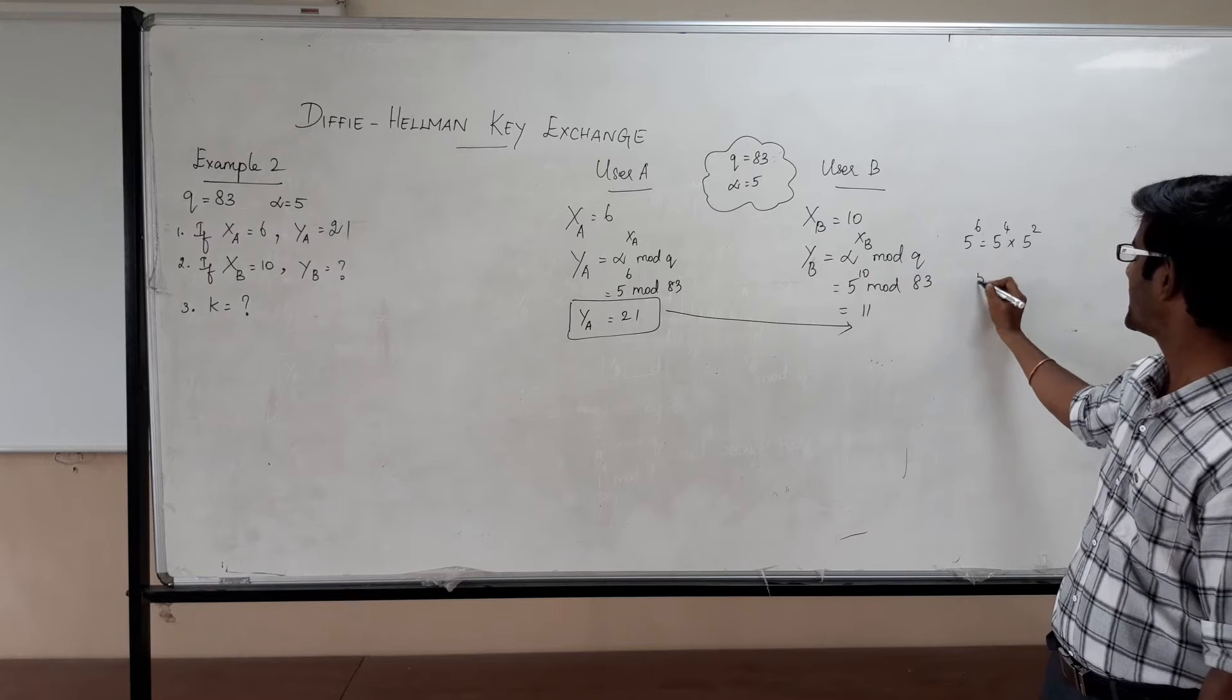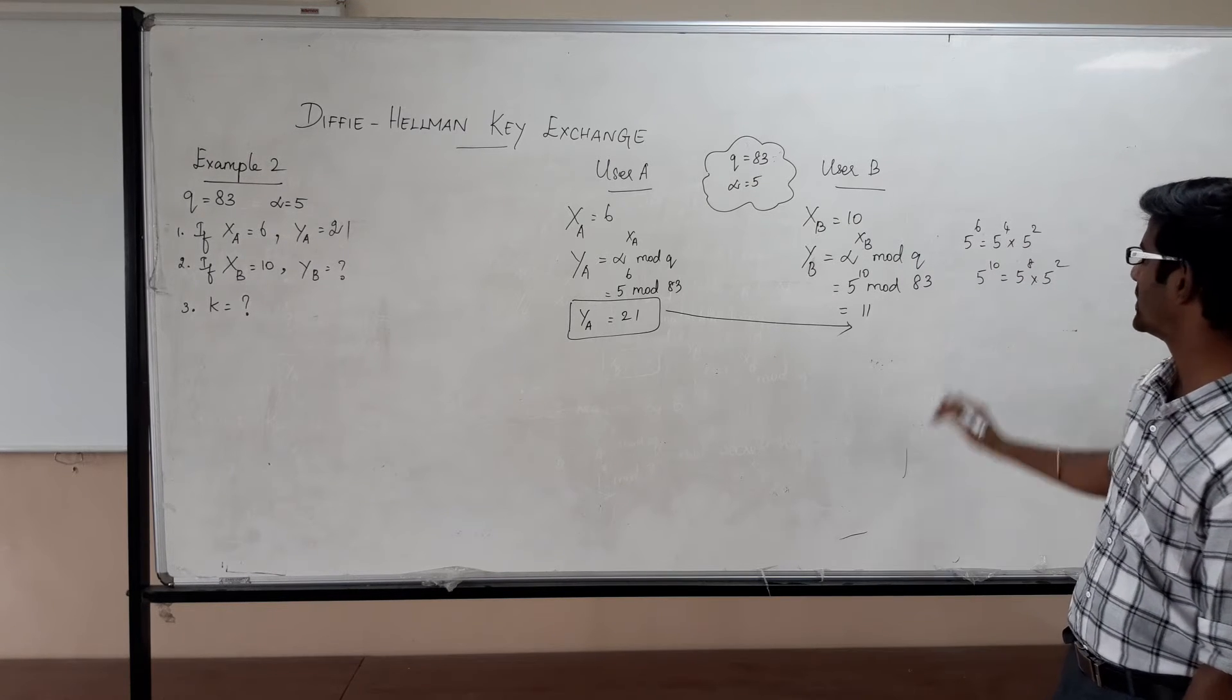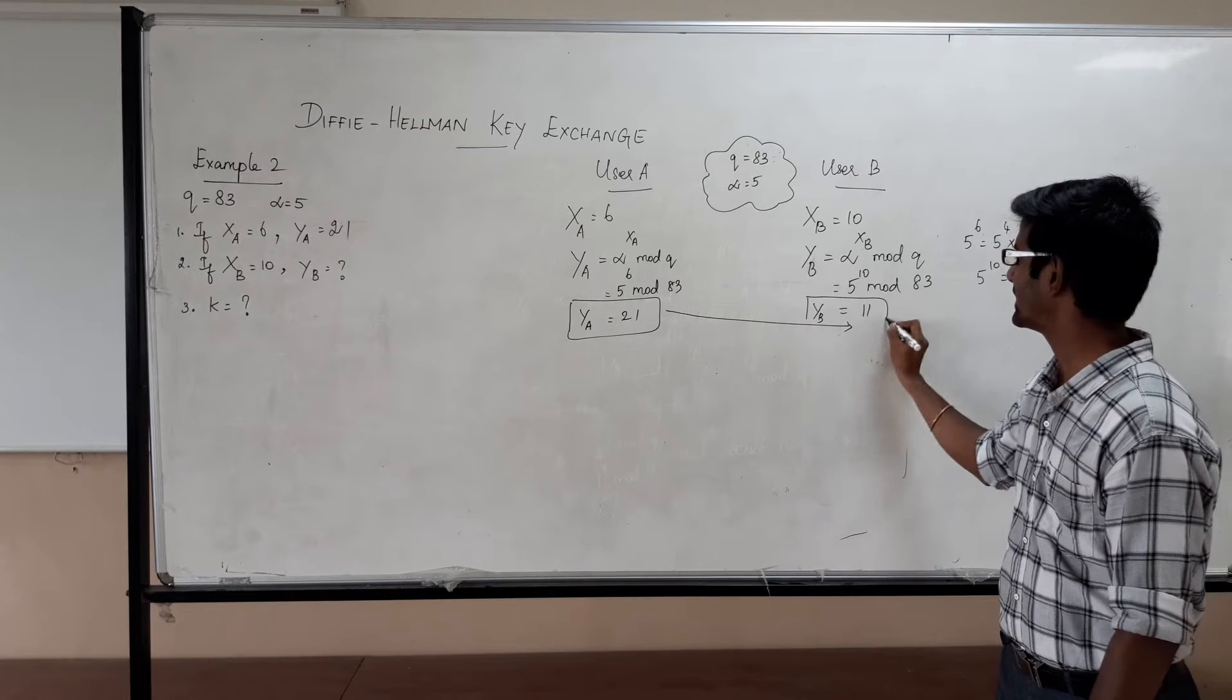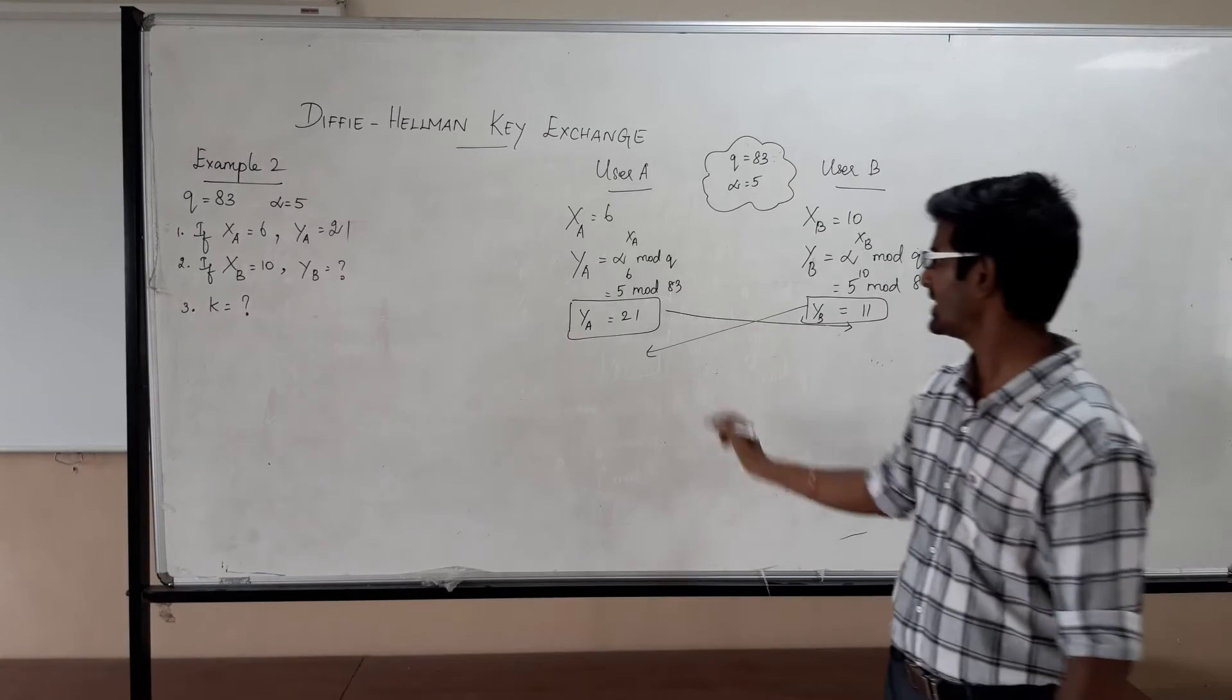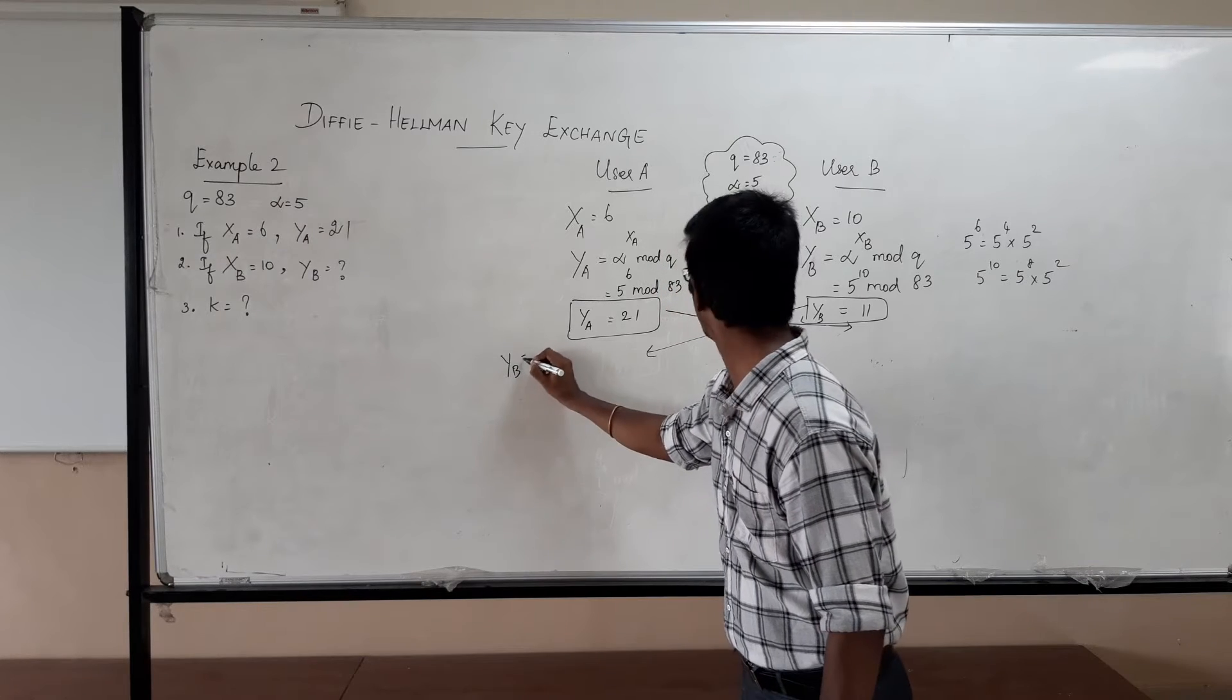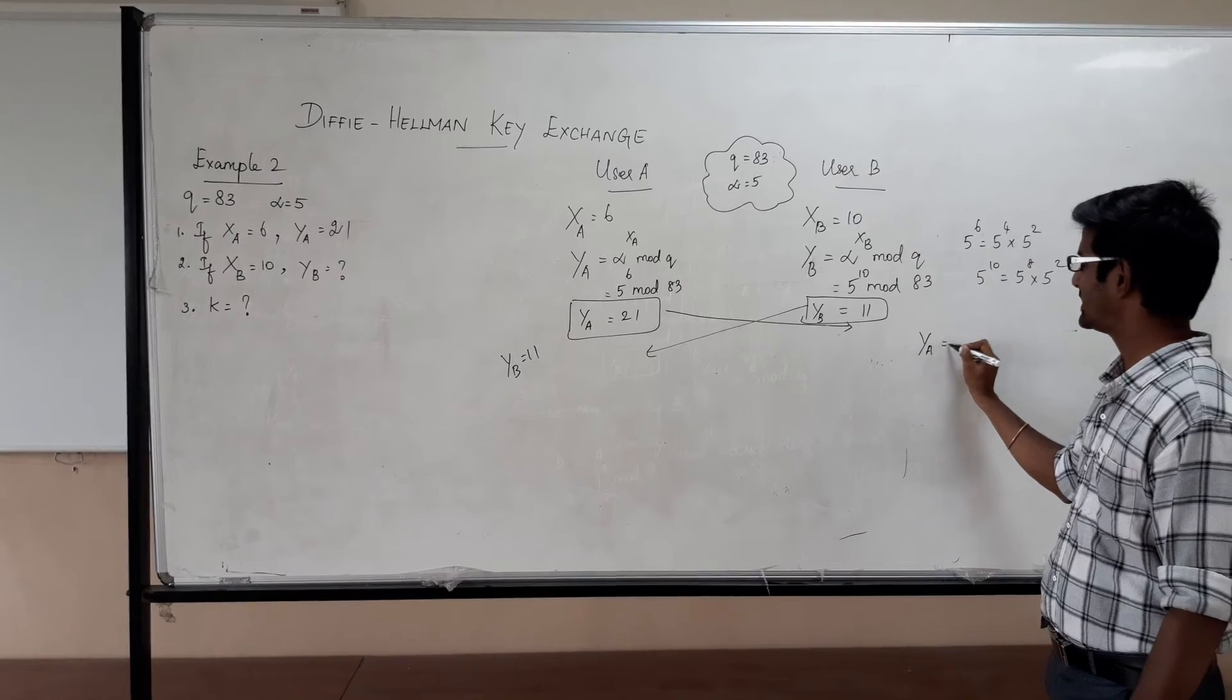Use modular exponentiation. 5 power 10 can be written as 5 power 8, 5 power 2 mod. Just calculate and substitute. We get YB equal to 11. Now this YB is going to exchange with user A. Now user A knows what is YB which is equal to 11. And user B knows what is YA which is equal to 21.